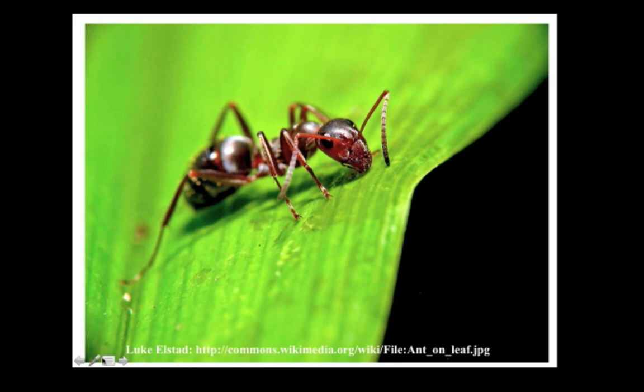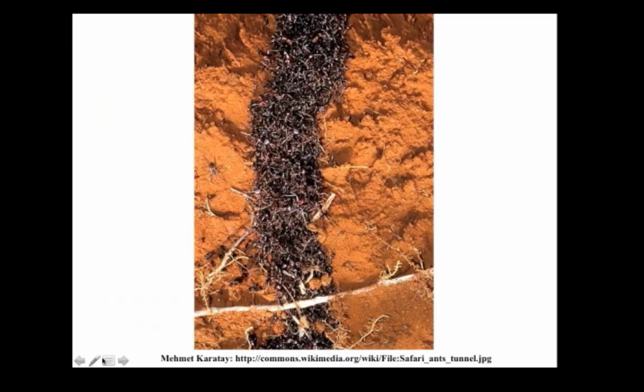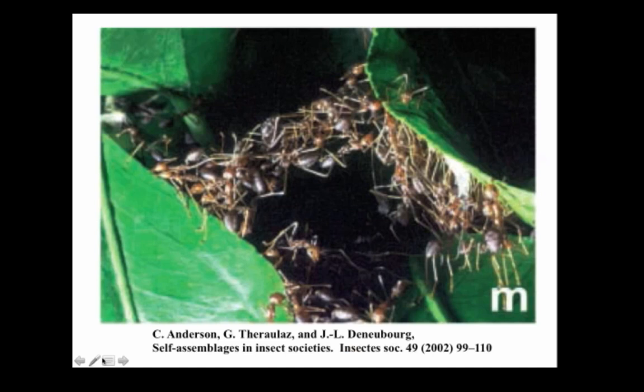A great example to begin with is ants. Nigel Franks, a well-known ant researcher, once wrote that the solitary army ant is behaviorally one of the least sophisticated animals imaginable. In extremely high numbers, however, it's a different story. Here is a colony of army ants building a tunnel. Each ant on its own is very simple, but the colony as a whole can work together cooperatively to accomplish very complex tasks without any central control — without any ant or group of ants being in charge.